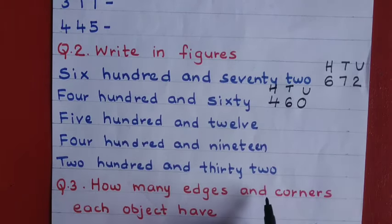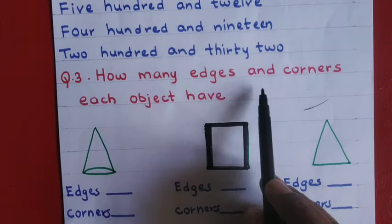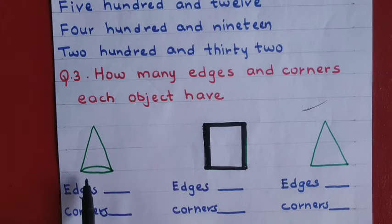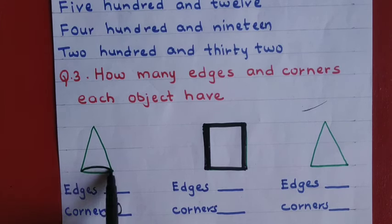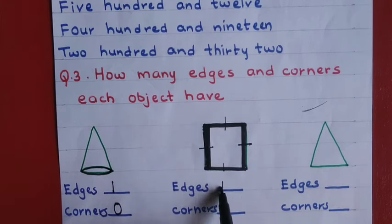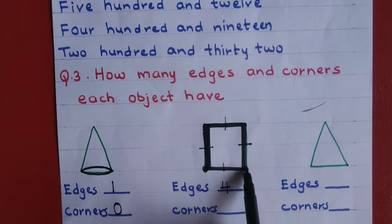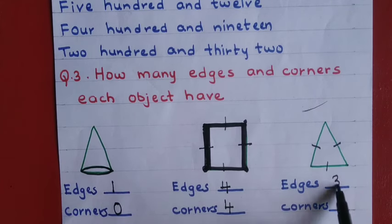You can do the remaining one. Question number three: how many edges and corners does each object have? A cone has only one edge and zero corners. A rectangle has four edges — one, two, three, four — and four corners. A triangle has three edges and three corners.